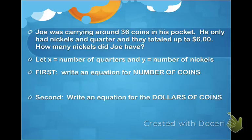Joe was carrying around 36 coins in his pocket. He only had nickels and quarters, and they totaled up to $6. How many nickels did Joe have?